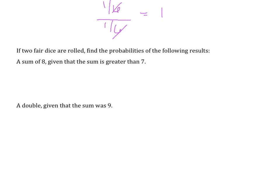Two fair dice are rolled. Find the probabilities of the following results: A sum of 8 given that the sum is greater than 7. Of the numbers that are rolled that the sum is greater than 7, how many of those are also a sum of 8? We could roll a 6 and a 2, a 5 and a 3, a 4 and a 4, a 3 and a 5, and a 2 and a 6. All of those options their sum is greater than 7 and at the same time their sum is 8.